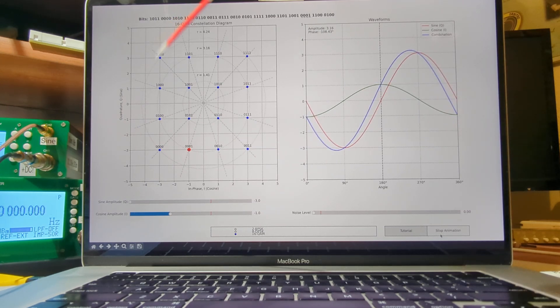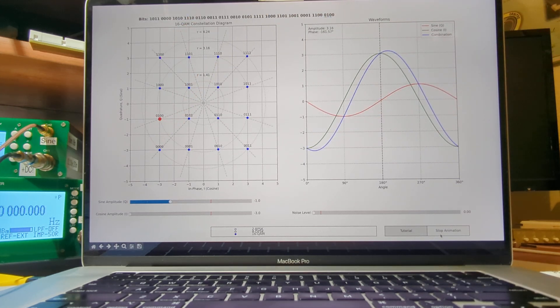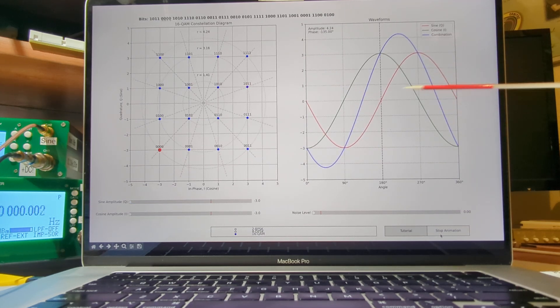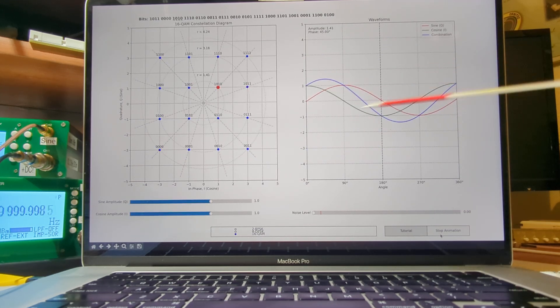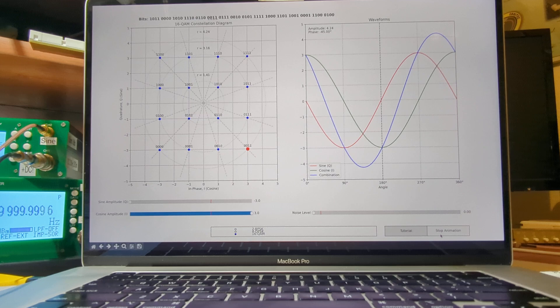And by combining those two different waveforms and varying their amplitude, you can produce all these different output waveforms, which is the blue waveform. Now, here again, on this diagram, the red is the sine wave, the green is the cosine wave, and then the blue is the resultant combined waveform, which would be transmitted to the receiver.